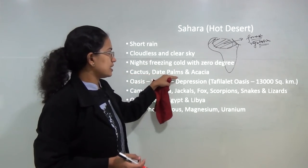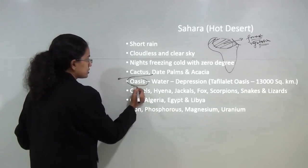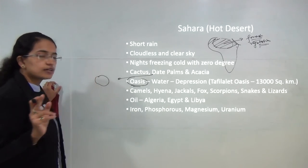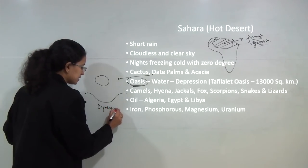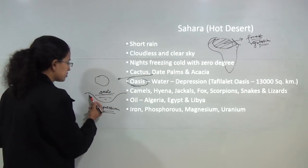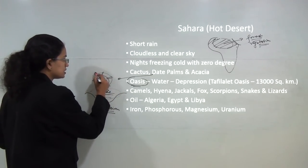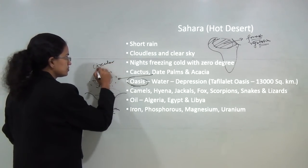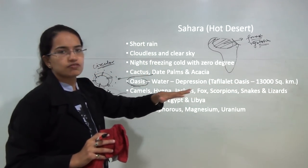The major vegetation is cactus, date palms and acacia. Cactus is seen throughout the desert area. Date palms are seen close to regions of oasis. An oasis is a water body found in a desert area — it is a kind of depression. When we worked with aeolian landforms, we discussed erosional features, one of which was depression. This depression is filled with water and forms an oasis. The region surrounding an oasis has date palm trees and small settlements. As a result, the settlement pattern in desert areas is primarily circular. A famous oasis is the Tafilalt oasis, which covers an area of 13,000 square kilometers.